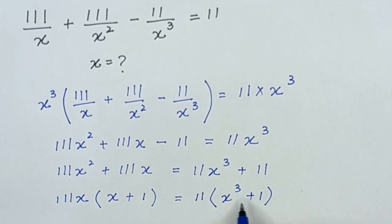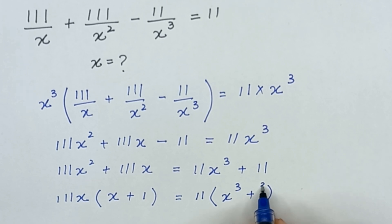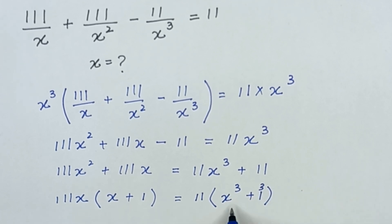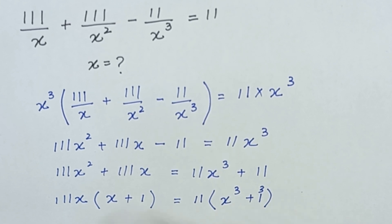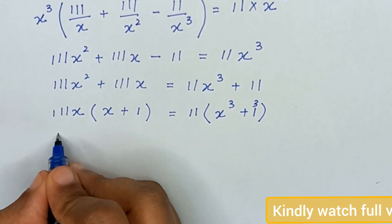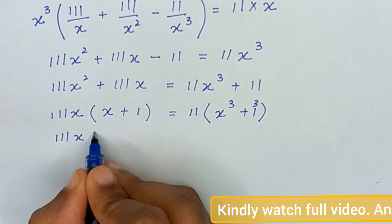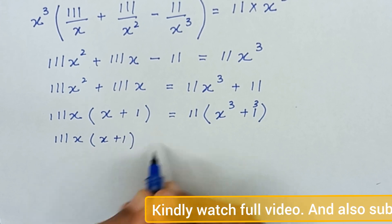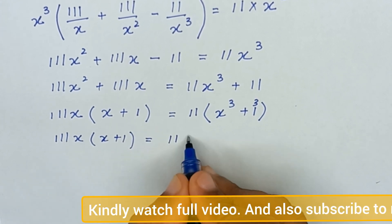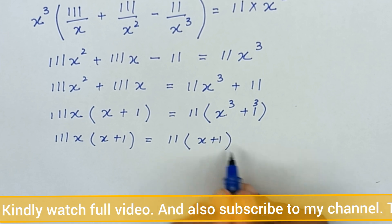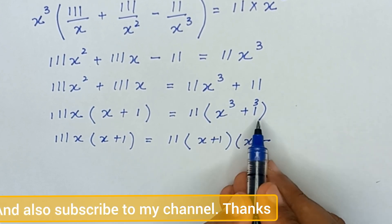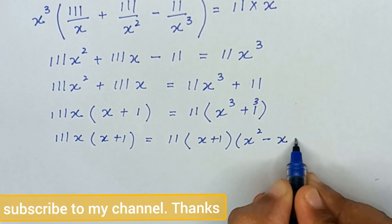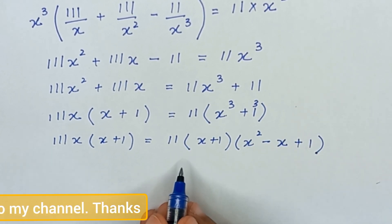Now we have x³ plus 1, and since 1 is the same as 1³, we will apply the formula a³ plus b³ equals (a + b)(a² − ab + b²). So the left-hand side becomes 11x(x + 1), and the right-hand side becomes 11(x + 1)(x² − x + 1).